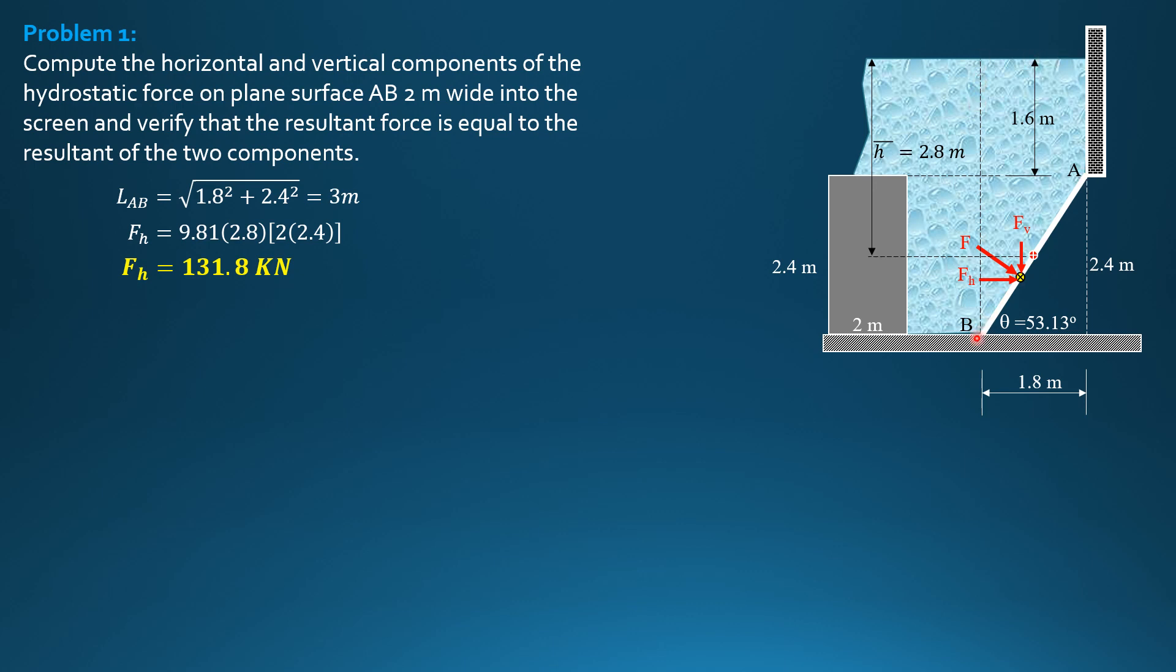This volume is equal to area of trapezoid times perpendicular to the board 2 meters. So FV is specific weight of water times volume. And the volume is area of trapezoid because by principle we draw vertical lines through the endpoints of the curve up to the liquid surface.